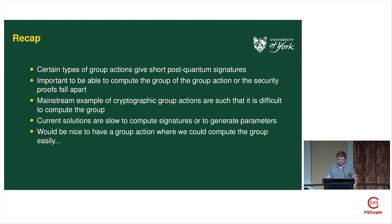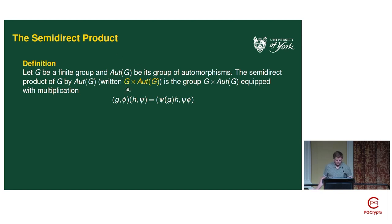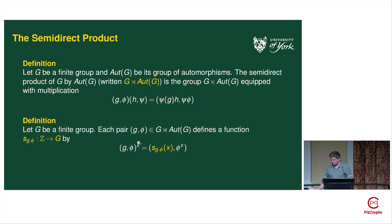It would be nice if we had a group action where we could compute this group easily. This is the semi-direct product bit of Semi-Direct Product Diffie-Hellman. The semi-direct product consists of ordered pairs from the group and its automorphism group, with multiplication defined so that applying φ then ψ gives the composition. We define a function s from the integers into the group by what happens when you take the exponent in this group. S corresponds to a choice of (g, φ) in the semi-direct product group, giving a family of functions s.